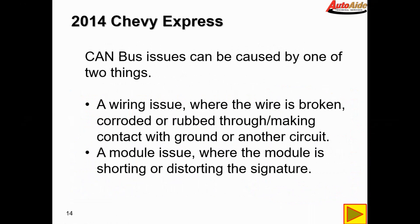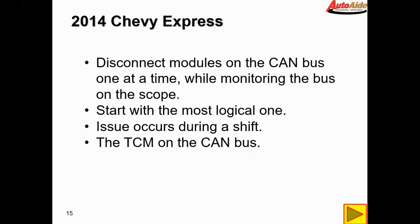CAN bus issues can be caused by one of two things: a wiring issue where the wire is broken, corroded, rubbed through, or making contact with ground or another circuit — or a module issue where the module is shorting or distorting the signature due to an internal issue with the circuit. In this case, what we're going to do is disconnect one module at a time. That's the easiest way to start with an issue like this rather than digging through a wiring harness. We like to rule out the modules first because they're usually the easiest to start with. So we're going to disconnect CAN bus modules one at a time while monitoring the bus on the scope.